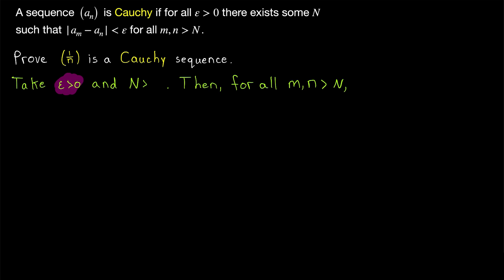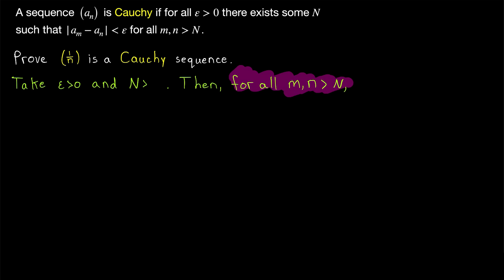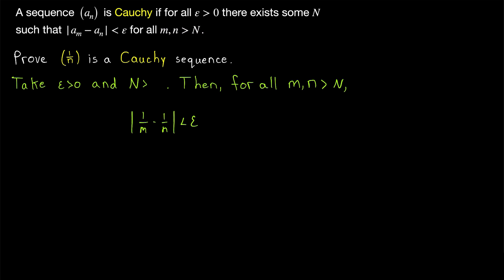We need to take an arbitrary epsilon greater than zero, then we'll need to find a sufficiently large value of big N that works. By works, we mean that for all m and n greater than that big N value, we have that the distance between the m-th and n-th terms of our sequence is less than epsilon. The idea is that we'll start with the expression representing the distance between the m-th and n-th terms and work with it to figure out what big N will need to be.